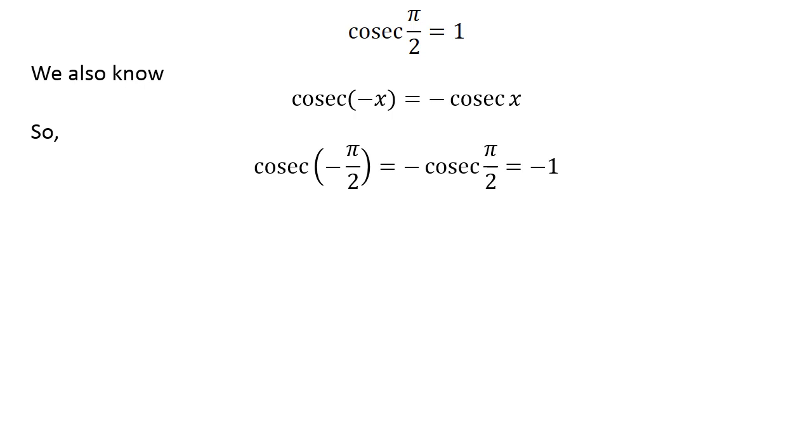So, cosecant of minus half of pi is equal to minus 1. As minus half of pi lies in the closed interval of minus half of pi and half of pi except 0.